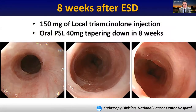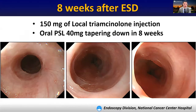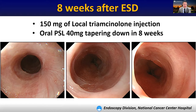In addition to local triamcinolone injection immediately after ESD to prevent post-ESD stricture, the patient took oral prednisolone. The patient has been asymptomatic and follow-up endoscopy eight weeks after ESD reveals no stricture at all. The standard gastroscope could pass through and no endoscopic balloon dilation was required. The mucosal defect had changed to normal squamous cell epithelium, which is very nice for the patient.